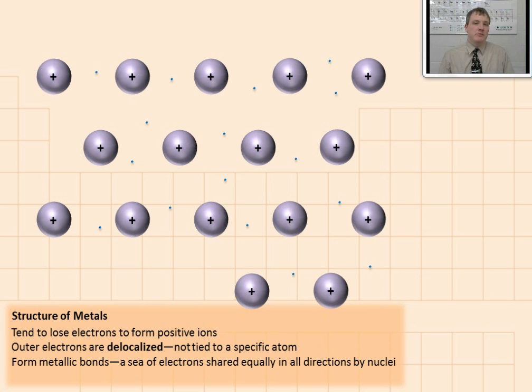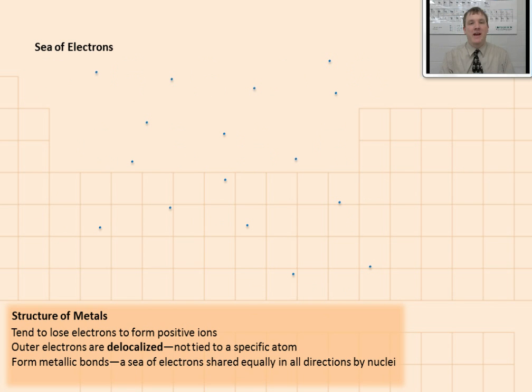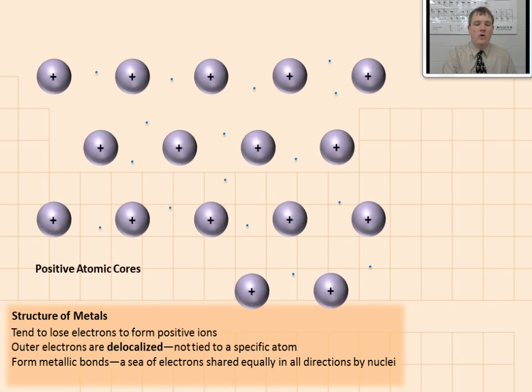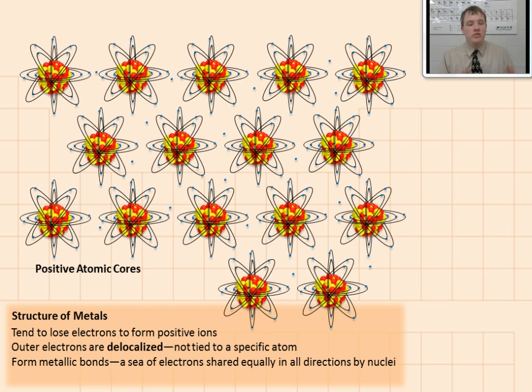So these metallic bonds are made up of positive nuclei in a sea of electrons. Notice the sea of electrons in the background. These are negative charges that want to attract positive charges to themselves. And then the positively charged cores that are interspersed within that sea of electrons, it makes a well-held-together substance. And that's what metals are.